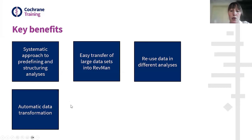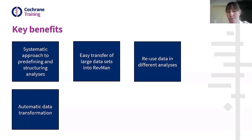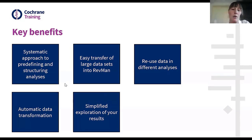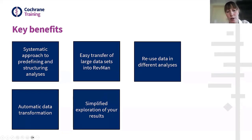The process also involves automatic transformation of data to combine arms and include both contrast and arm-level data in one analysis. Essentially, RevMan will calculate contrast data from arm-level data, meaning you don't really need to use the calculator anymore. This process also simplifies the interpretation of results because data can be reused for different analyses.